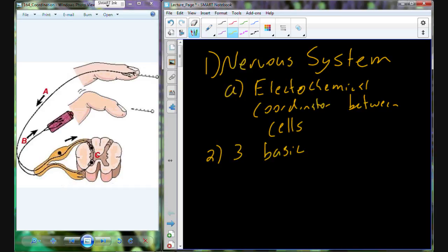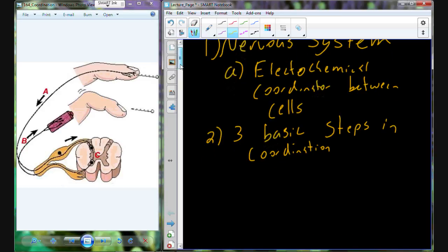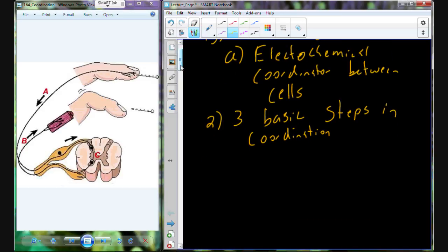So the nervous system follows three basic steps in this coordination process. And you can see the three basic steps here in this particular image. This is a pin, by the way.